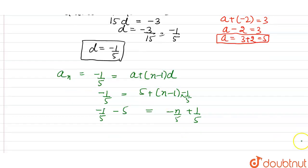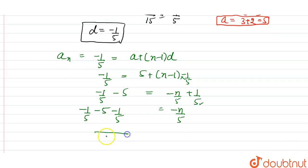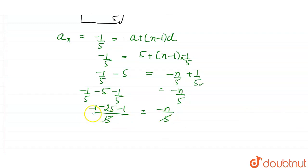Rearranging: -n/5 = -1/5 - 5 + 1/5. Taking LCM of 5: -n/5 = (-1 - 25 - 1)/5 = -27/5. Cancelling the denominators on both sides: -n = -27, therefore n = 27. So the number of terms in the given AP is 27.